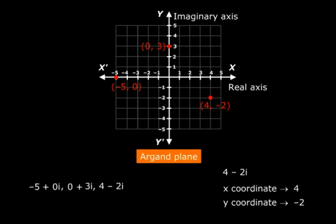So here we have represented a number that only has a real part, a number that only has an imaginary part and a number that has a real as well as an imaginary part. And this is the concept of an Argand plane.